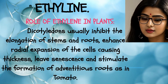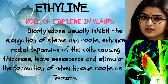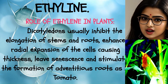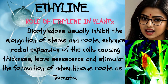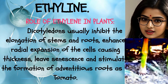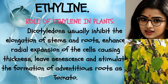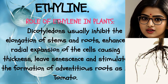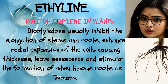Role of Ethylene in Plants. In dicotyledons, ethylene usually inhibits the elongation of stems and roots, enhances radial expansion of the cells causing thickness, promotes leaf senescence, and stimulates the formation of adventitious roots, as in tomato.